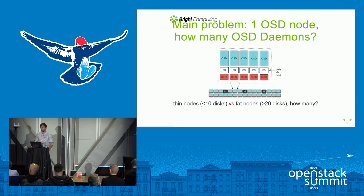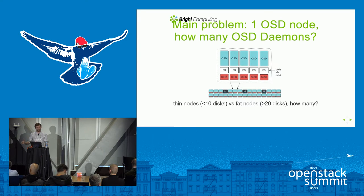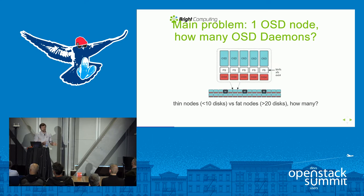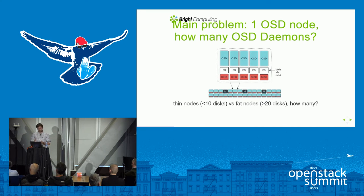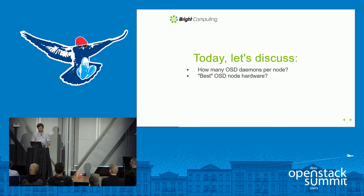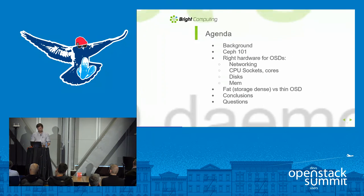When starting out with a Ceph cluster, a typical problem you face is answering: how many OSD daemons — how many disks per node — do you want in a single Ceph OSD node? You talk about the concept of thin OSD nodes, which typically have fewer than 10 disks, or fat OSD nodes, which typically have more than 20 storage disks. We'll compare those and find the sweet spot.